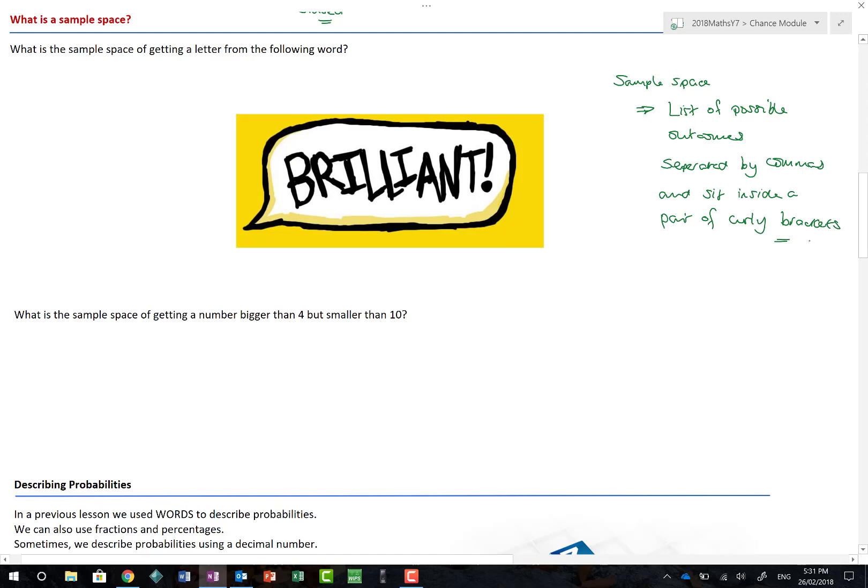For example, what is the sample space of getting a letter from the following word? I tried to trick you. There is my word, and it's what all of you guys undoubtedly are brilliant. The sample space are, a B, an R, an I. And I'm only going to put one L because it's a repeated letter. I'm not going to put this I because I've already got an I. There's an A, there's an N, and there's a T. So those are the possible letters I have to choose from in the word brilliant.